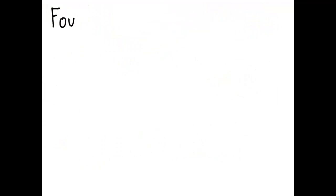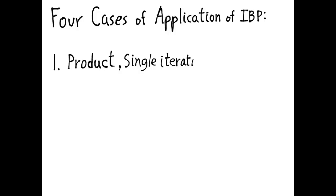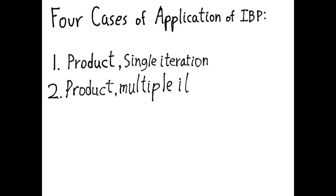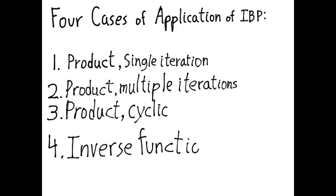There are four specific types of integration by parts problems. First: things that look like a product rule but require only a single iteration. Second: things that look like a product rule and require multiple iterations. Third: things that look like a product rule and are cyclic — you'll understand this when I go through the examples. Fourth: things that look like inverse functions.